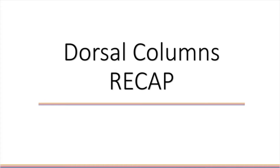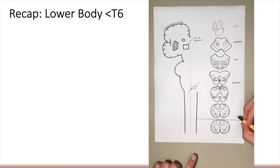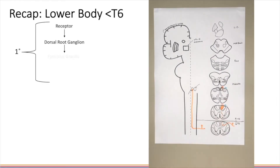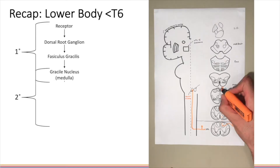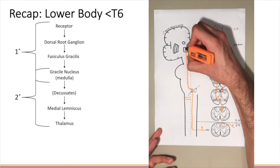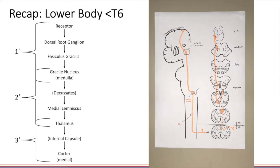Now let's recap the dorsal column medial lemniscus pathway. For the lower body below T6, the first order neuron runs from the receptor to the dorsal root ganglion before ascending in the fasciculus gracilis to the gracile nucleus in the medulla. The second order neuron runs from the gracile nucleus, decussates, and then ascends in the contralateral medial lemniscus to the thalamus. The third order neuron runs from the thalamus to the medial part of the cortex via the internal capsule.